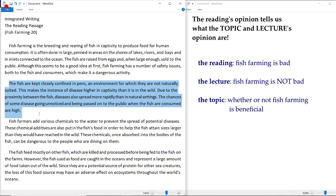All right, now let's move on to the first body. The fish are kept closely confined in pens—pens means cages—an environment for which they are not naturally suited. This makes the instance of disease higher in captivity than it is in the wild. Due to the proximity—proximity means distance—between the fish, diseases are also spread more rapidly than in natural settings.